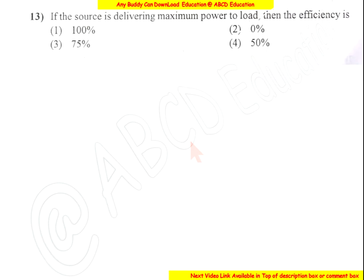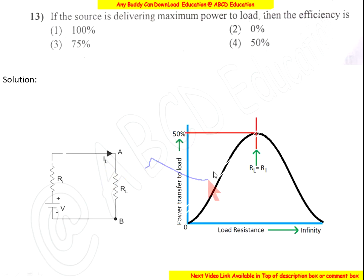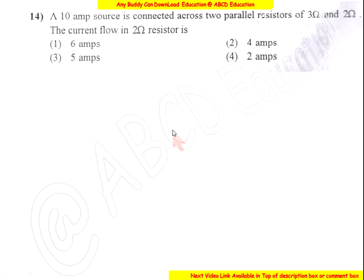If the source is delivering maximum power to the load, the efficiency is 50 percent. When the internal resistance equals the load resistance under the maximum power transfer theorem, it provides maximum power. At that condition, the efficiency is 50 percent. So the answer is option 4.